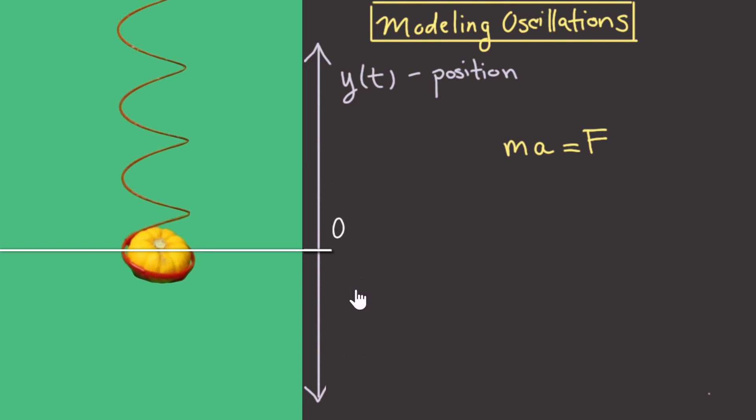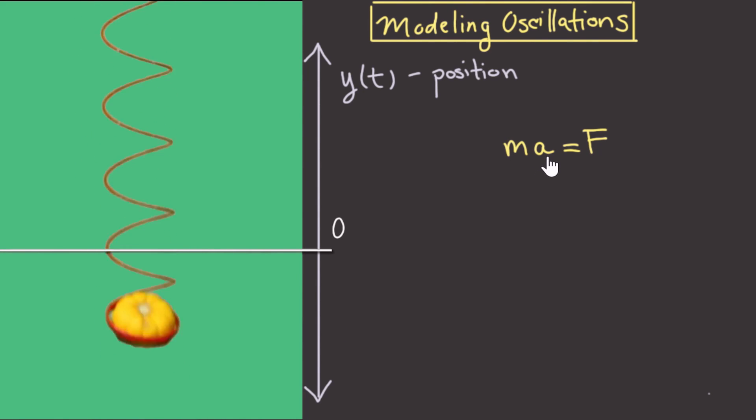Now because all motion happens in this vertical direction, the acceleration is the second derivative of our variable y. It's the second derivative of position. So we can write this as ma is equal to m times y double prime.